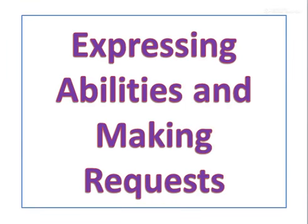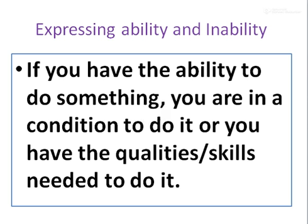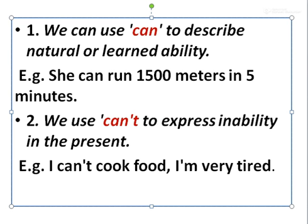Expressing Abilities and Making Requests. Expressing Ability and Inability: if you have the ability to do something, you are in a condition to do it, or you have the qualities or skills needed to do it. We can use 'can' to describe natural or learned ability. Example: she can run 1500 meters in 5 minutes.